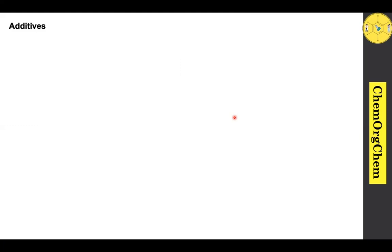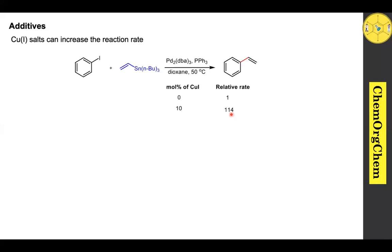Additives play a crucial role in the Stille cross-coupling reaction. There are three types of additives: copper-based additives, lithium chloride additives, and fluoride-based additives. Copper(I) salt can increase the reaction rate. Here you see iodopentyne reacts with vinyl stannane under palladium catalysis — without copper iodide the relative rate of reaction is 1, but when you use 10 mol% of copper iodide, the relative rate drastically increases. The exact role of copper is the scavenging of free ligand, which can interfere in the transmetalation step.